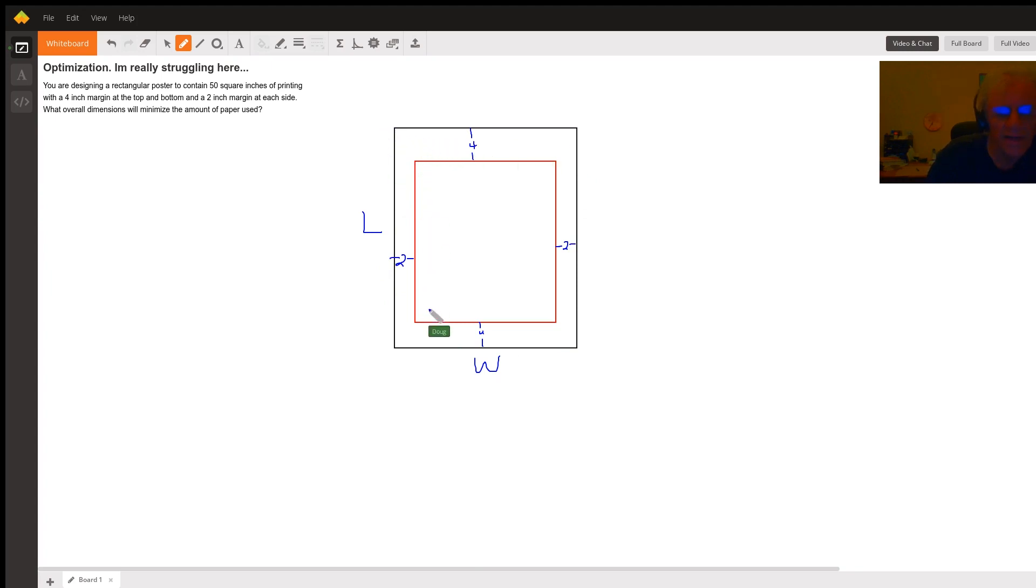And then the red rectangle on the inside represents the printing area, where we have these four-inch margins at the top and bottom and two inches at the side.